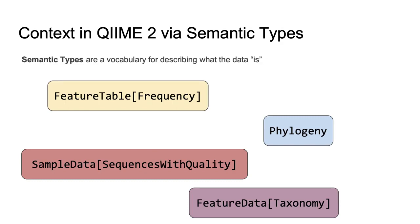So with all of that set up, I imagine you're all anticipating that I'm going to show you how this relates to QIIME 2 — and that is exactly the case. QIIME 2 attempts to encode useful context within some related concepts in the framework and within the ecosystem. The title of my talk was about semantic types and formats, so let's start with semantic types. The term semantic types is the vocabulary for describing what data is. The semantics of the data refer to the meaning or the concept of the data.